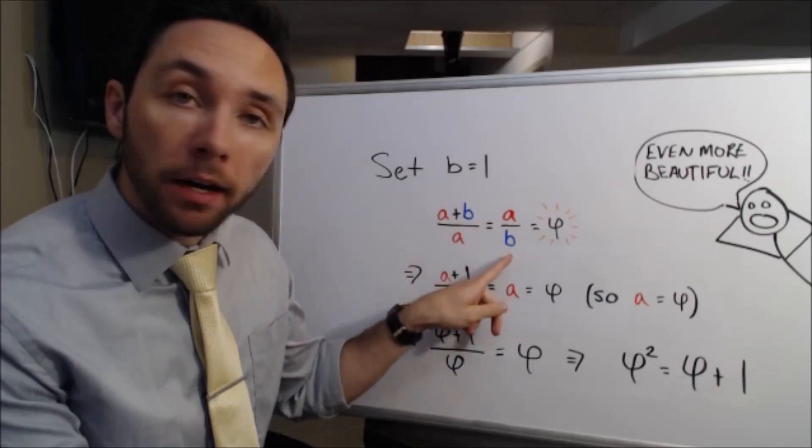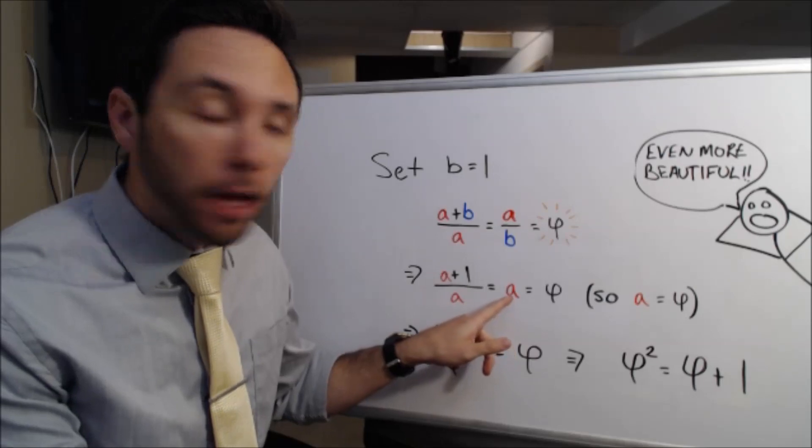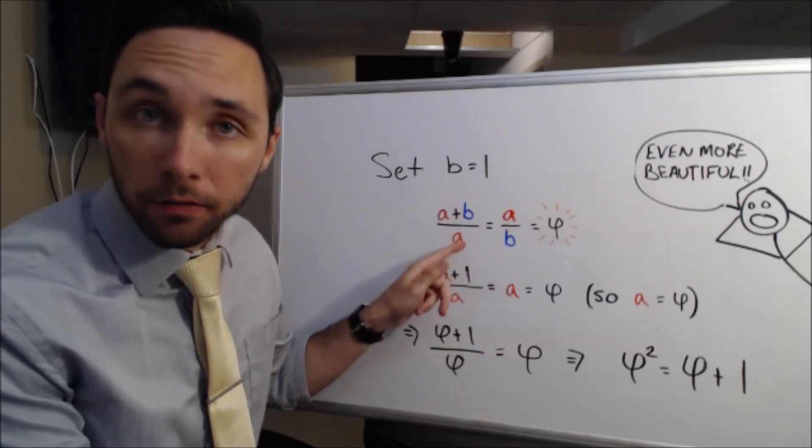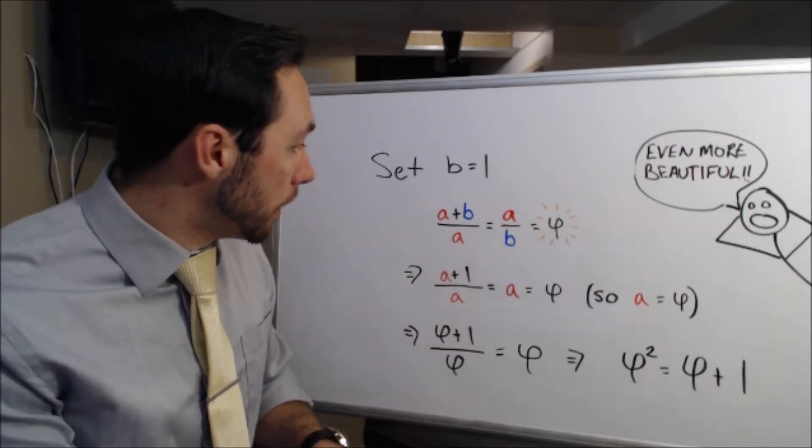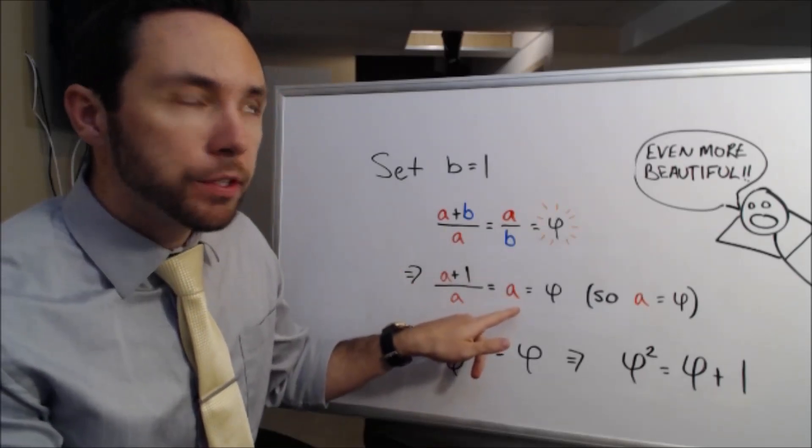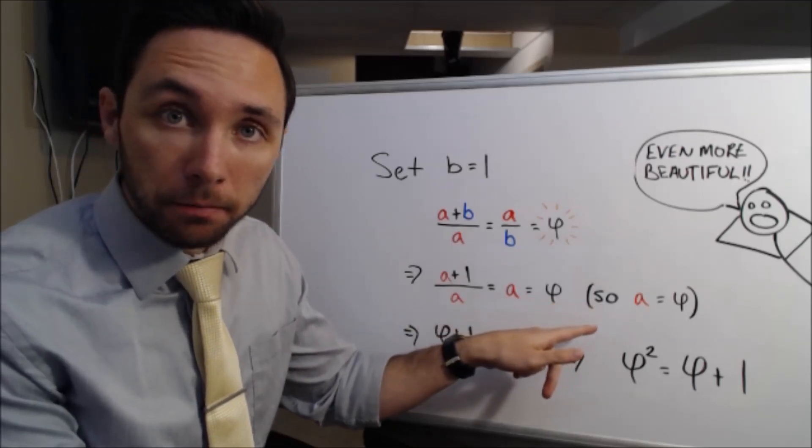When you do this, this B down in this denominator becomes 1. Anything over 1 is simply itself. And then on the left side here, this B, I just swapped it out for a 1, that's all. Now we have A plus 1 over A. This is equal to A, which is also equal to Phi, so A is just Phi when you set B equal to 1. Pretty straightforward.